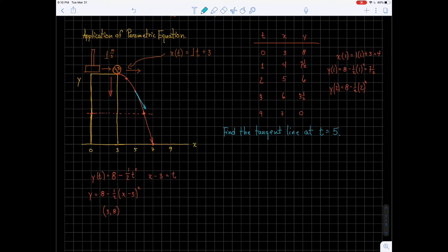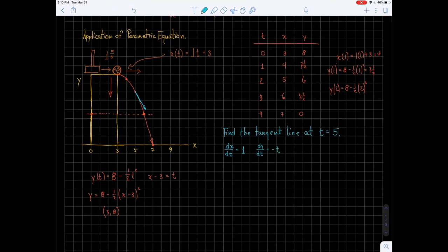So what we do is we need to take the derivative. So the derivative of x with respect to t is going to be 1. And then the derivative of y with respect to t is going to be minus t. And what we need to do is evaluate these at 5. So dx dt stays 1. And so I'm going to evaluate dy dt at t equals 5. So this becomes minus 5. And then using what we previously learned,